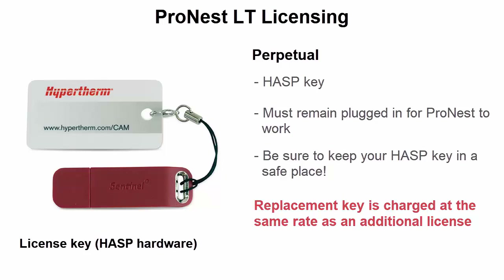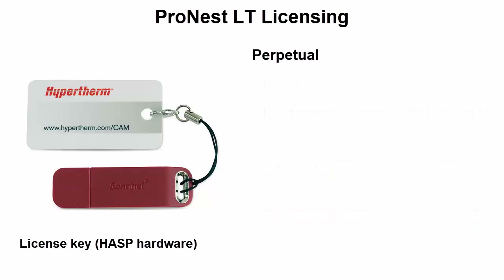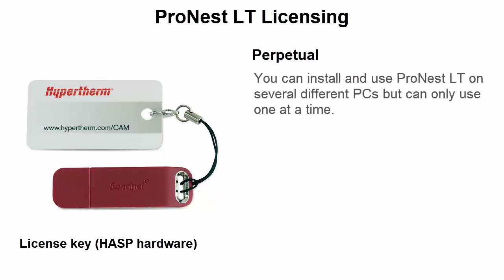With a perpetual license, you can install and use ProNest LT on several different PCs, but you can only use one at a time. Simply install ProNest on as many PCs as you want, then plug the Hasp key into the computer you want to use. This is handy if you want to run ProNest from several different locations, such as the office, the shop floor, at home, or wherever else you want to use it.